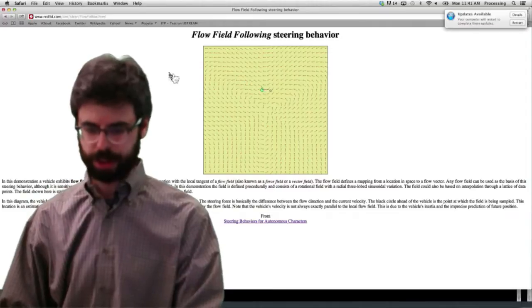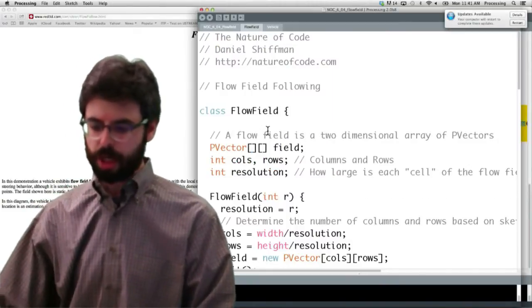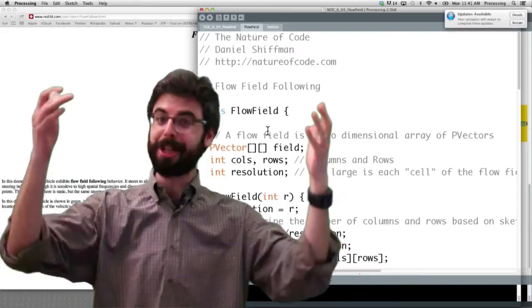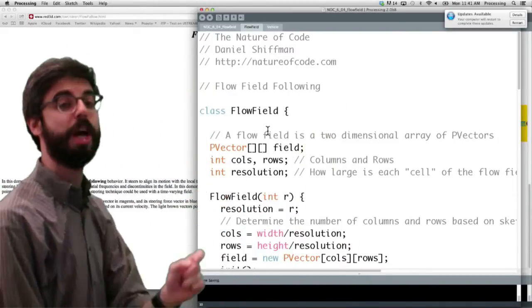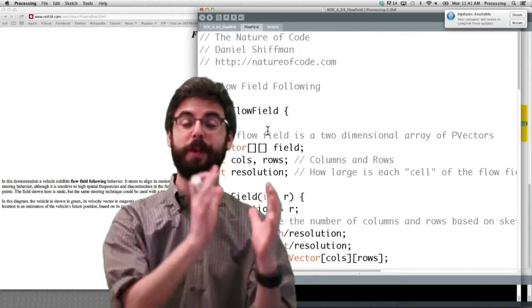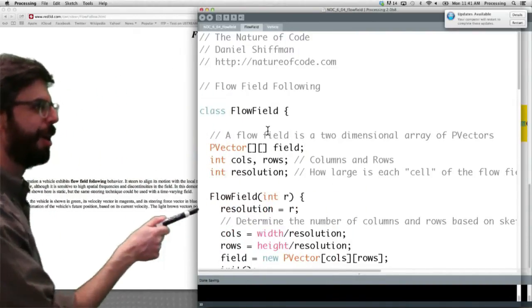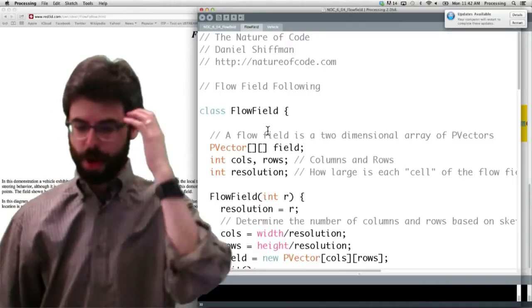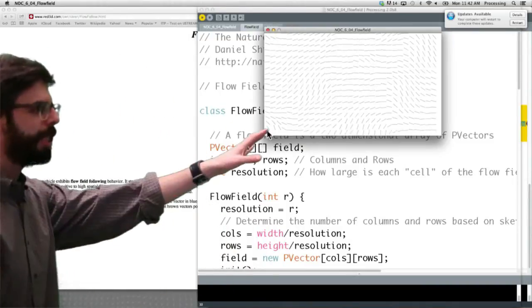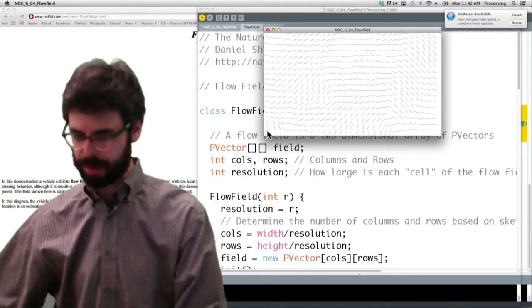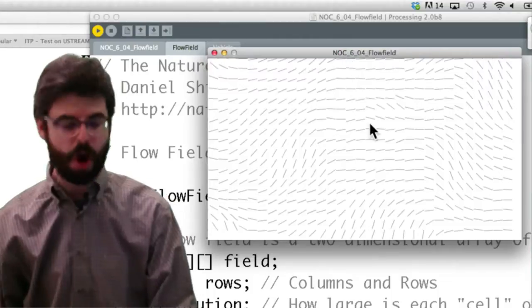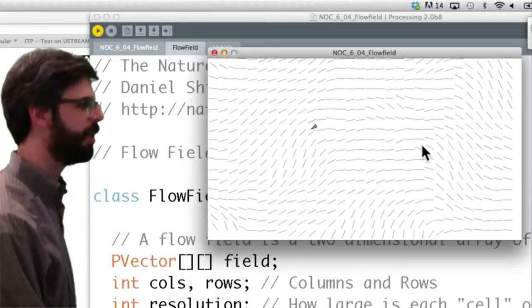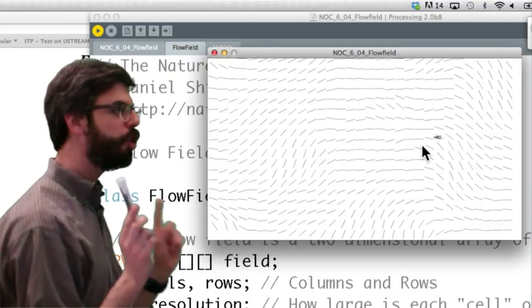So this is Reynolds, and now we're going to switch to processing. And here we've got it. So look at this. This is exactly what I was talking about. We have a flow field class, which has a two-dimensional array of vectors. It has columns and rows to keep track of how many columns and how many rows in that grid. And it also has a resolution. That resolution variable tells us what is the relationship between the number of columns and rows to the width and height of the window. And we can see that right down here. The number of columns is width divided resolution. The number of rows is height divided resolution. So when we run this example, what do we actually see?